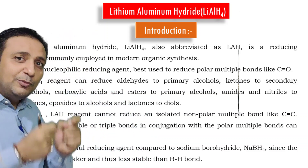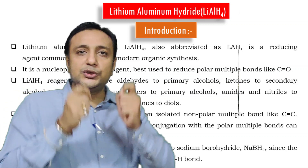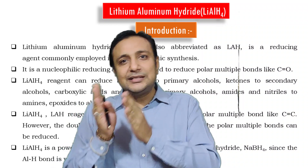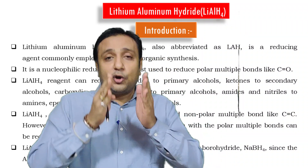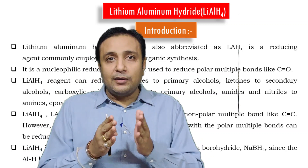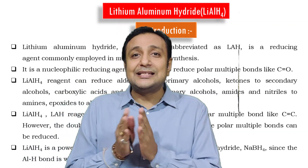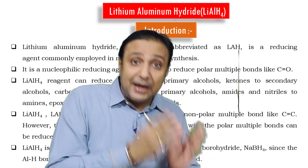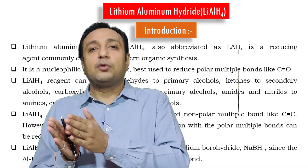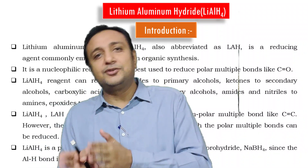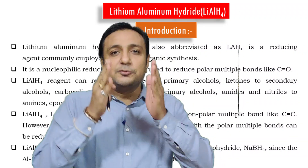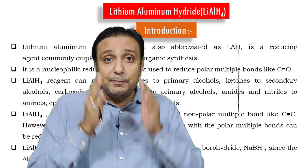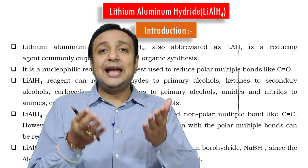Lithium aluminium hydride is not used to reduce non-polar multiple bonds such as C=C. However, when an alkene is conjugated with a polar multiple bond, then it can be used as a reducing agent. It is a very powerful reducing agent, better than NaBH4 (sodium borohydride), because the Al–H bond is much weaker than the B–H bond, making it the stronger reducing agent.